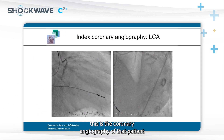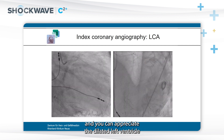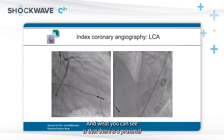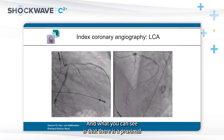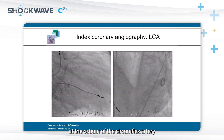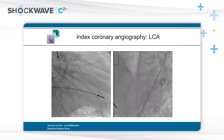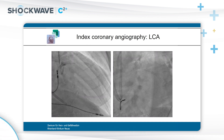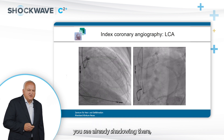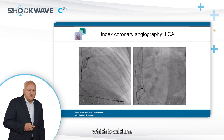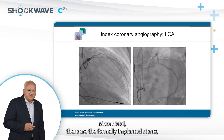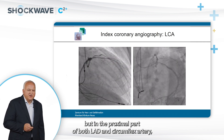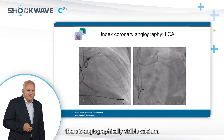This is the coronary angiography of the patient. You can appreciate the dilated left ventricle and dilated heart. There is a proximal, more circumferential stenosis at the ostium of the circumflex artery, and also additional disease in the proximal LAD. Before contrast shows up, you already see shadowing — which is calcium. More distal are the formerly implanted stents, but in the proximal LAD and circumflex artery there is angiographically visible calcium.